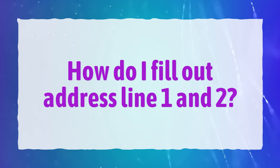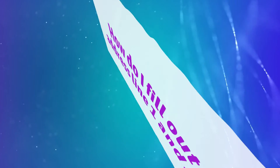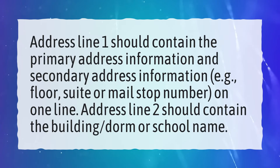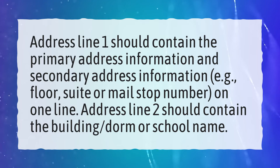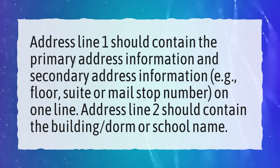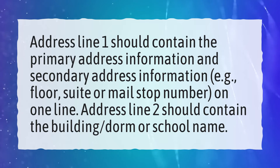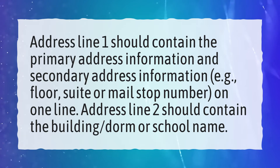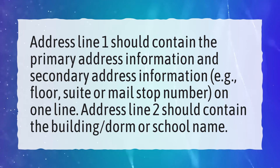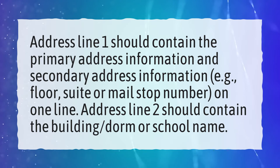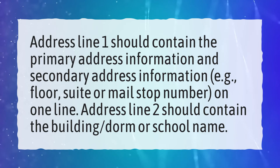How do I fill out Address Line 1 and 2? Address Line 1 should contain the primary address information and secondary address information, e.g., floor, suite or mail stop number, on one line. Address Line 2 should contain the building, dorm or school name.